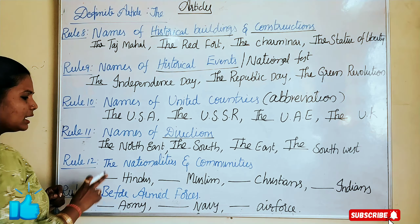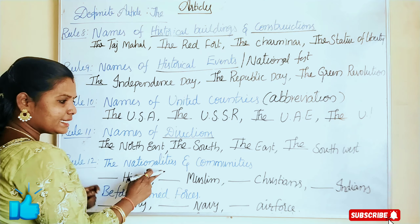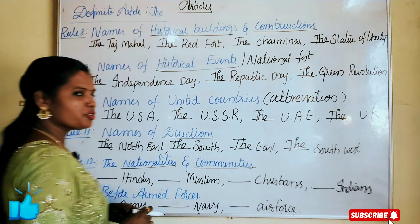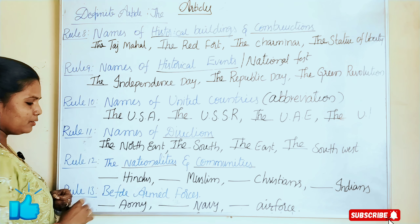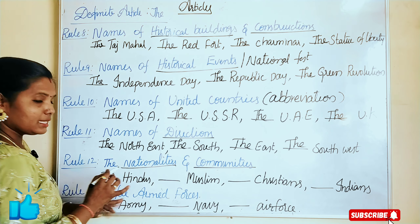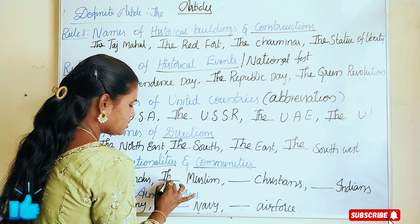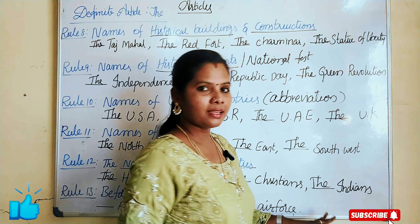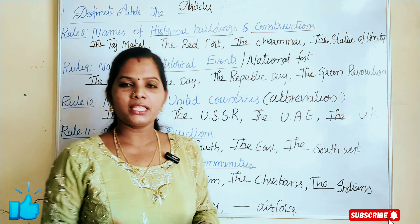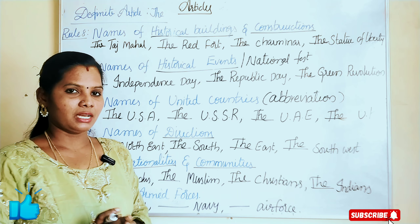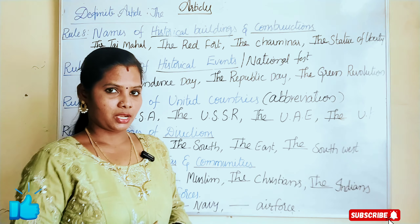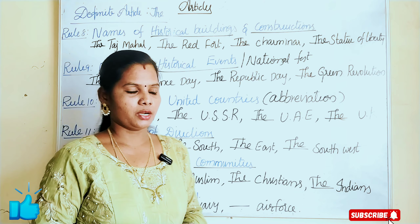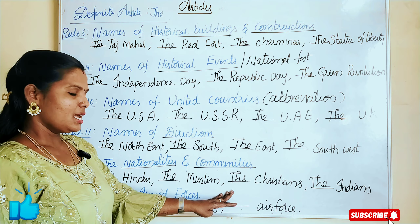Rule number 12 — the nationalities and communities. When we represent nationalities and communities, we have to use the article 'the'. Like the Hindus and the Muslims, the Christians, the Indians, the Sikh. Before all these words, we have to use 'the' to represent the religion or community. Every religion has its own identity and importance, so we use the article 'the' before them.